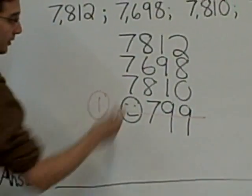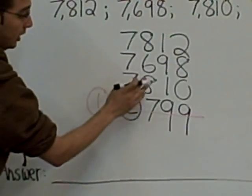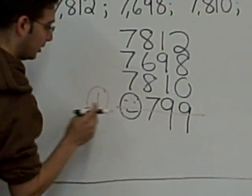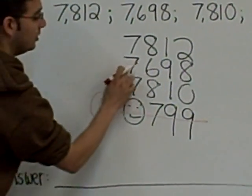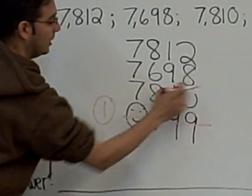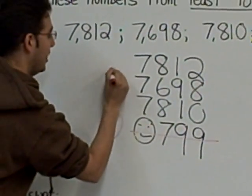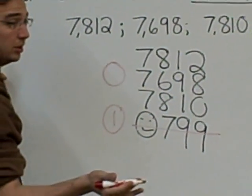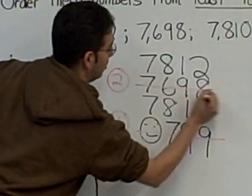Same. Same. Different. Different. Which number is different? Six. So that means that this entire number, 7,698, is the next smallest. We're going to give that the number? Two. Cross it out. Two numbers left.